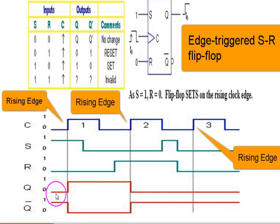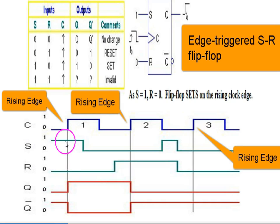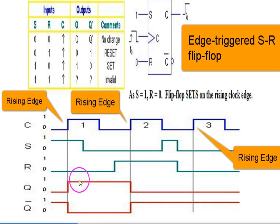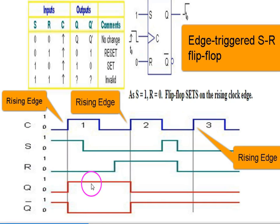Before the first rising edge, let's say Q is low and Q-complement is high. When the rising edge comes, S is high and R is low — so Q will go high and Q-complement will go low. This state continues until the next rising edge comes.